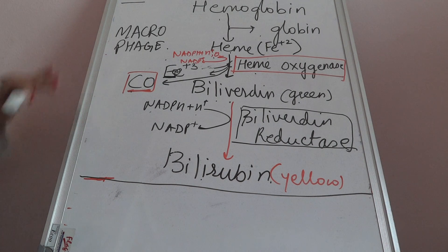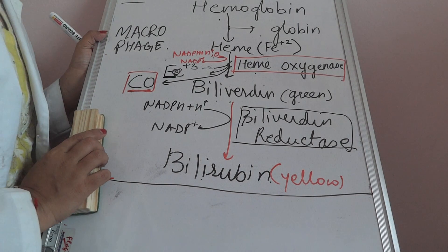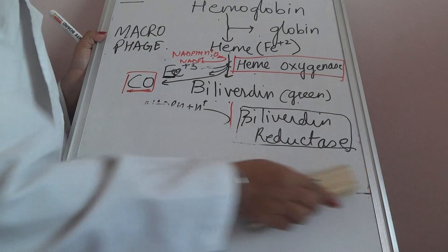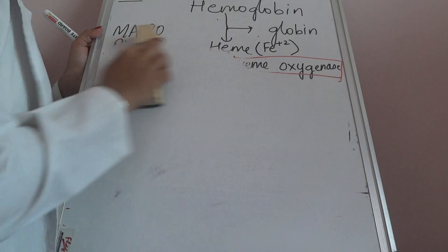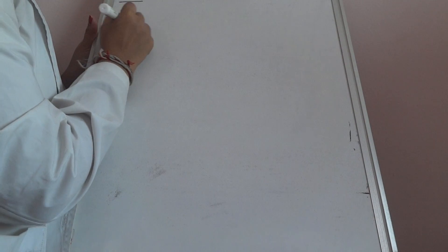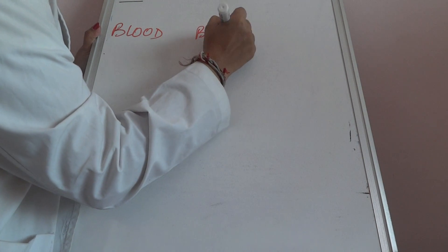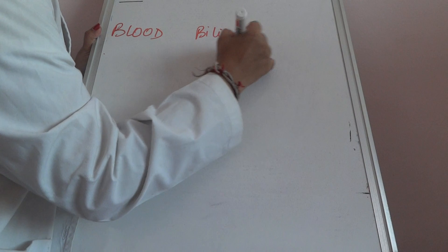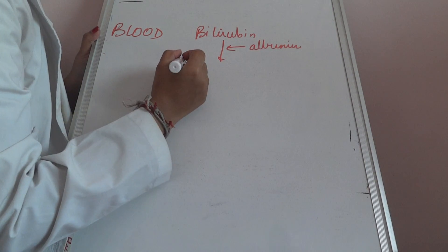This is the pathway in the macrophage. Now, bilirubin being a lipophilic molecule cannot transport on its own. It requires albumin to help it transport in the blood, so bilirubin will combine with albumin to form a bilirubin-albumin complex.